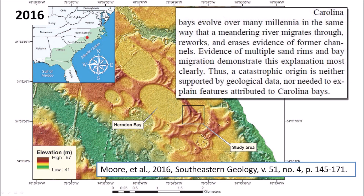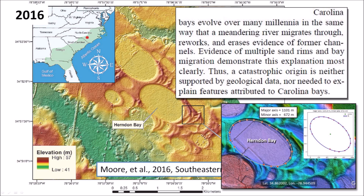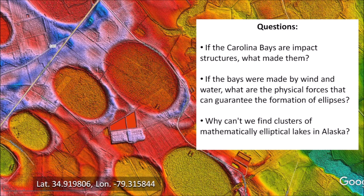Moore's 2016 paper on Herndon Bay states: "Carolina Bays devolve over many millennia in the same way that a meandering river migrates through, reworks, and erases evidence of former channels. Evidence of multiple sand rims and bay migration demonstrate this explanation most clearly. Thus, a catastrophic origin is neither supported by geological data, nor needed to explain features attributed to Carolina Bays." Should we stifle curiosity and not seek an explanation for the mathematically elliptical geometry of Herndon Bay? Geologists need to address: if the Carolina Bays are impact structures, what made them? If they were made by wind and water, what physical forces can guarantee the formation of ellipses? Why can't we find clusters of mathematically elliptical lakes in Alaska? We should start by trying to determine why the Carolina Bays are perfect ellipses.